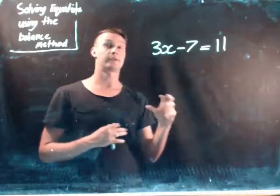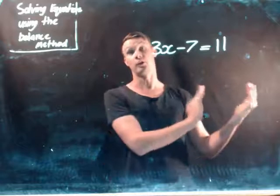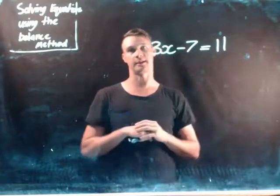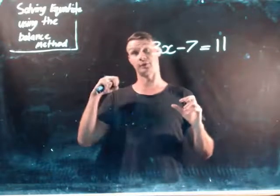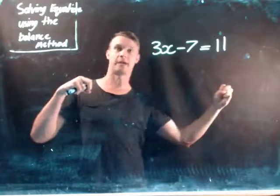Now the rule with the balancing method is that whatever you do to the left hand side you need to also match on the right hand side. Just like we did with the scales, if we took something off on the left hand side to balance it out, we also need to take it off on the other side as well.